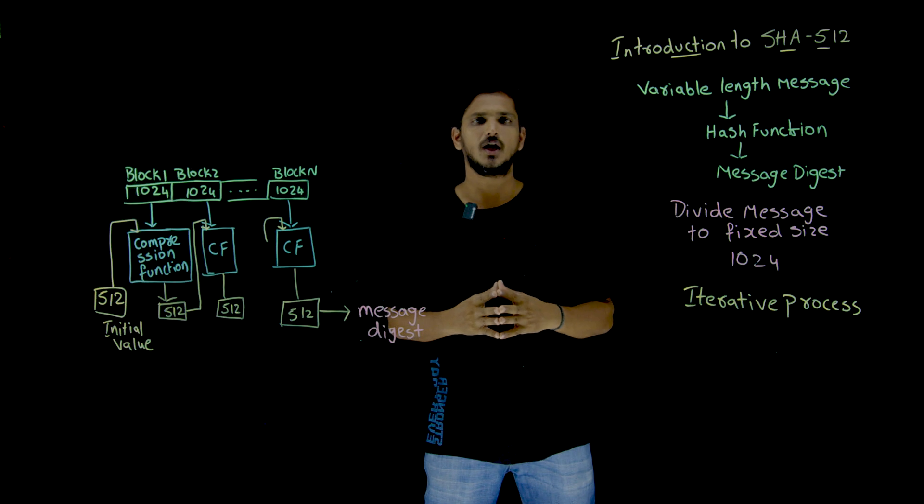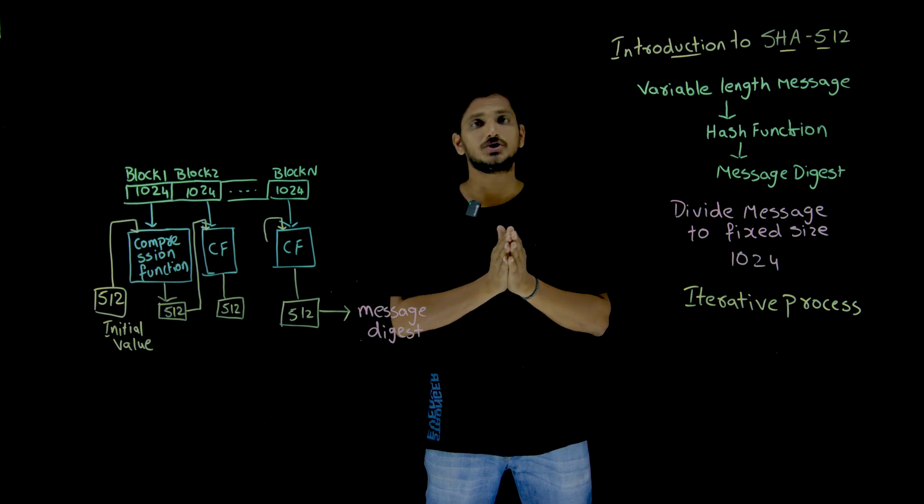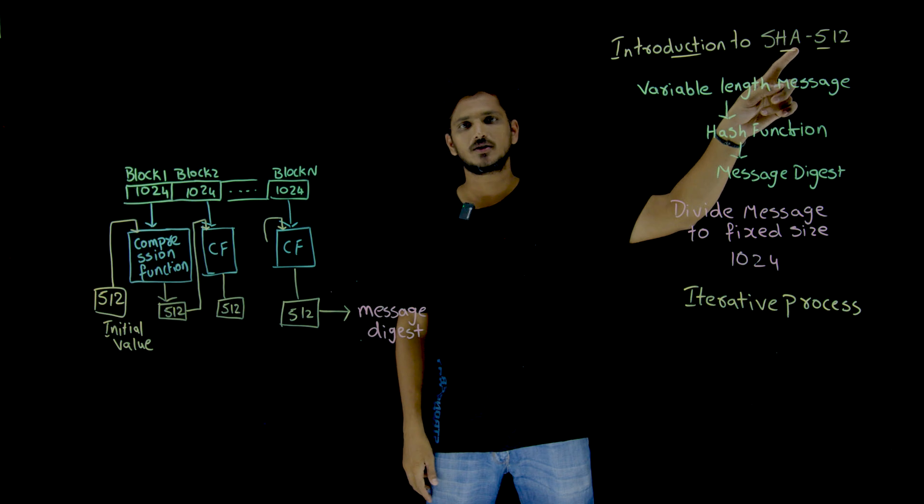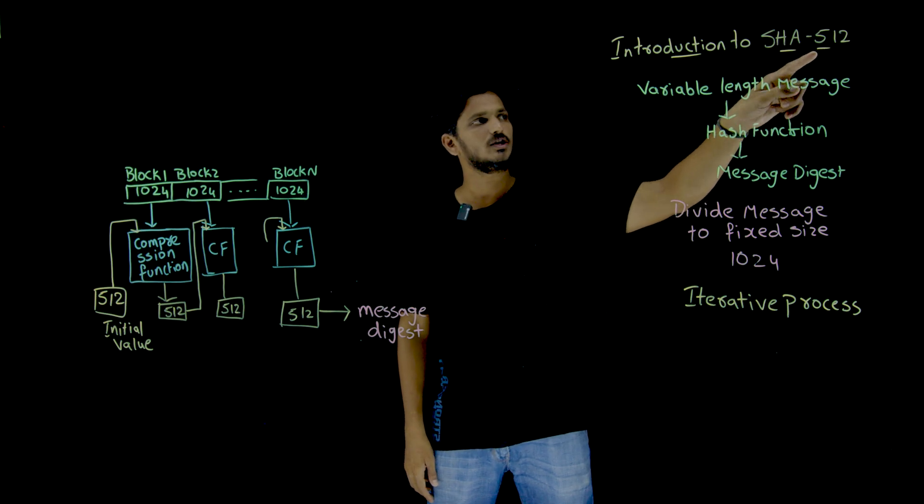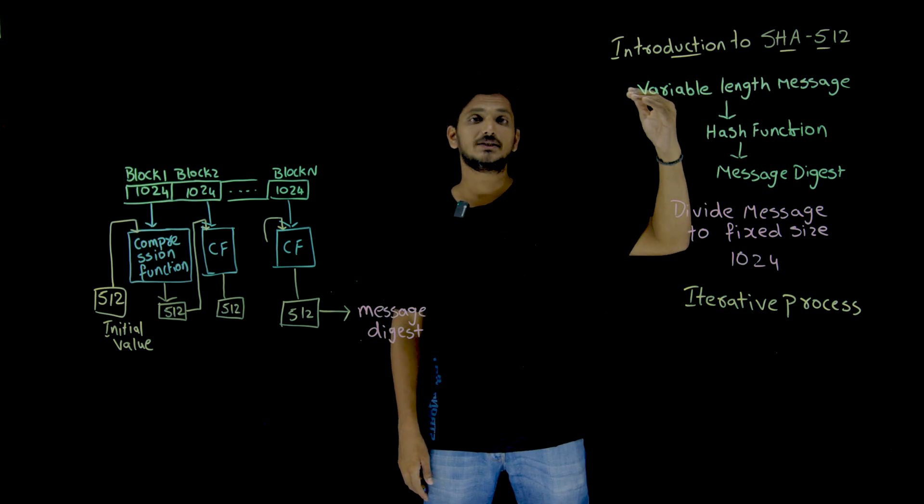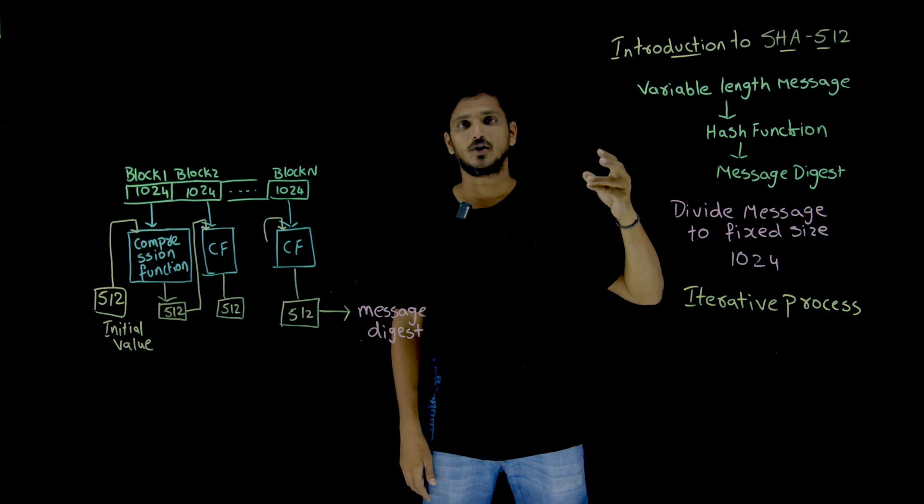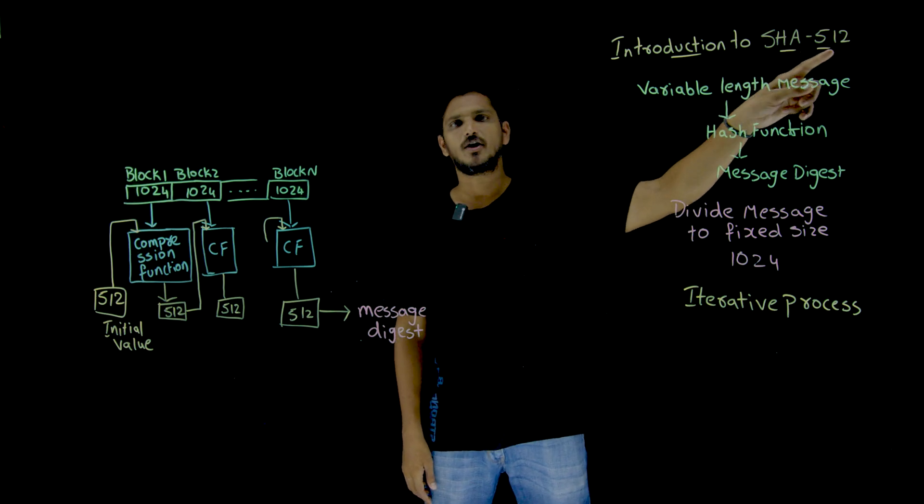In this class we will discuss about the introduction to SHA-512 algorithm, secure hash algorithm 512. Why you got 512 means it is going to give you a message digest of length 512, that is why it is named as SHA-512.